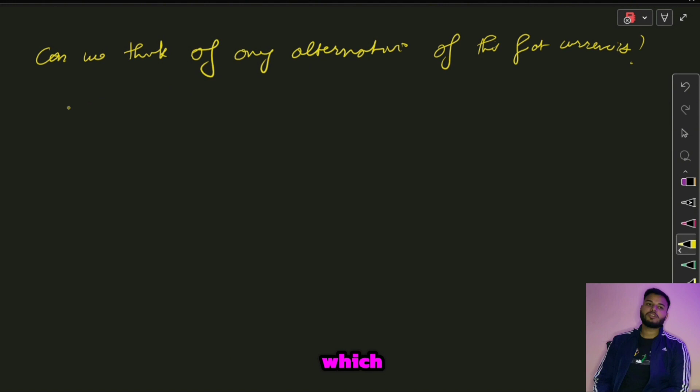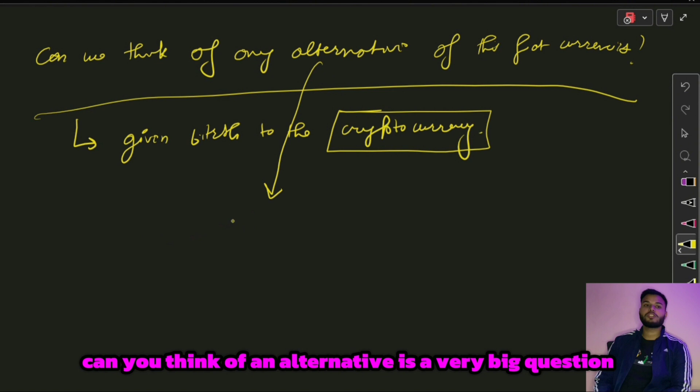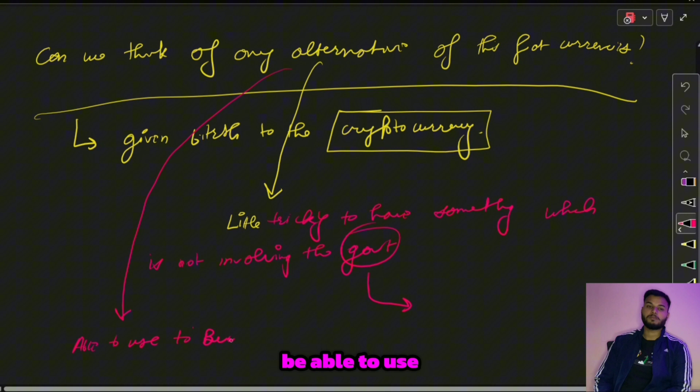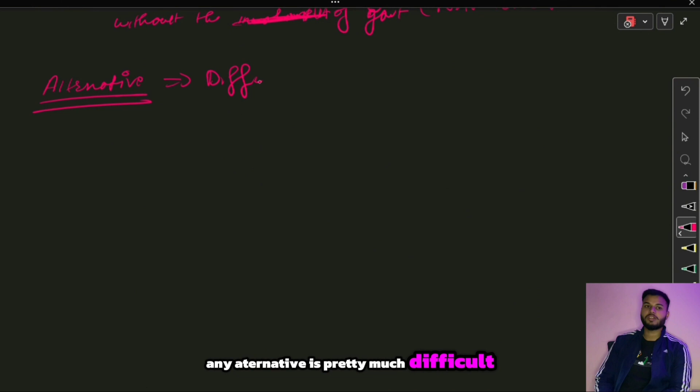The question of finding an alternative to fiat currency has arisen in many people's minds and has given birth to cryptocurrency. Thinking of an alternative is a big and tricky question because it means having something that can be used to buy or sell without government involvement. That is currently not easy, because the government is what brings trust into the monetary system — removing the government means removing the trust.